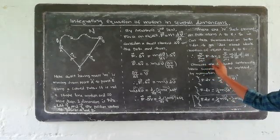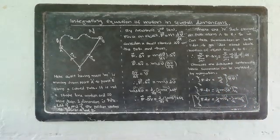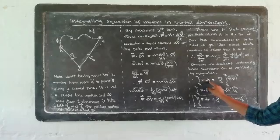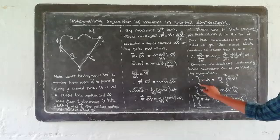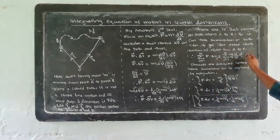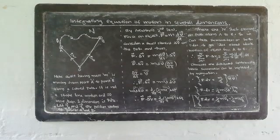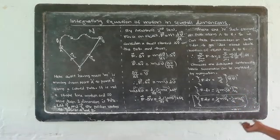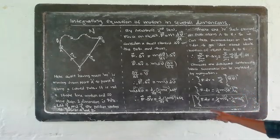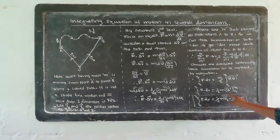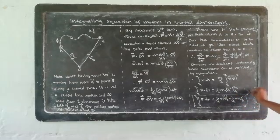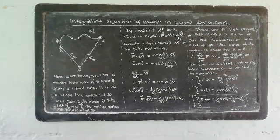We convert it into the line integral from R_A to R_B of F·dR. The right-hand side becomes the integral from vA to vB of (m/2)d(v²) = ½mvB² − ½mvA². So the integral from R_A to R_B of F·dr = ½mvB² − ½mvA².